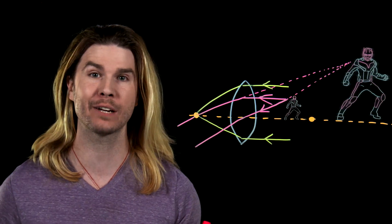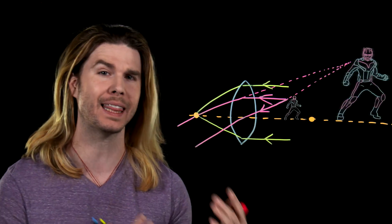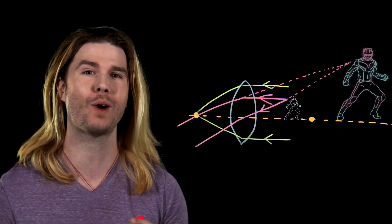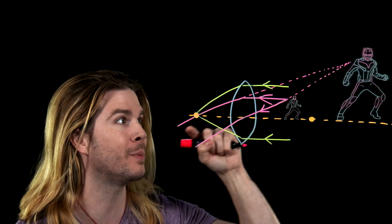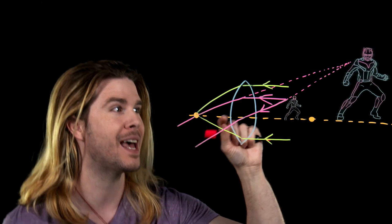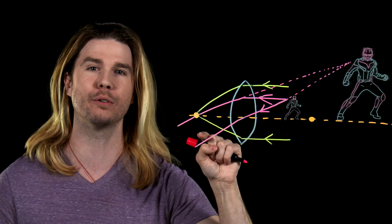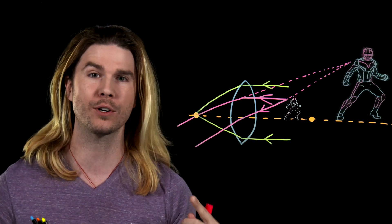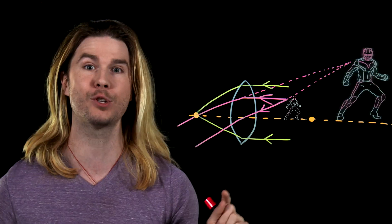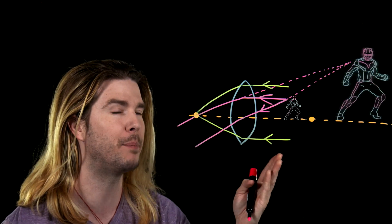And so when we look through a magnifying glass, what we see is not the actual image of the object, but rather a virtual image that our brain creates just assuming that the light coming to us is from straight lines of light and nothing bent. We assume that the light that we are seeing must be coming from a bigger object and so we see a bigger object.